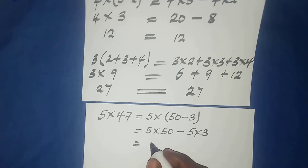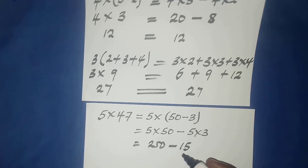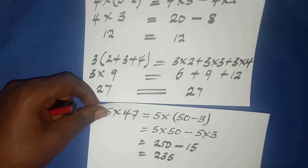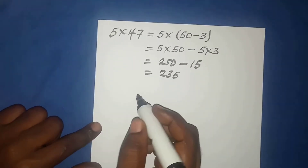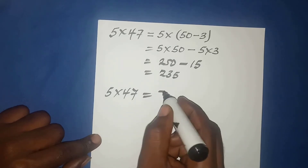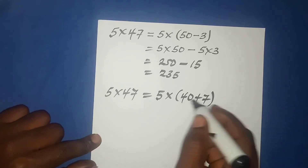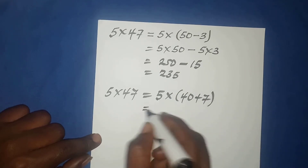Five times fifty equals two hundred fifty, minus five times three equals fifteen, so two hundred fifty minus fifteen gives two hundred thirty-five. Alternatively, we can rewrite five times forty-seven as five times forty plus seven, since forty plus seven equals forty-seven.